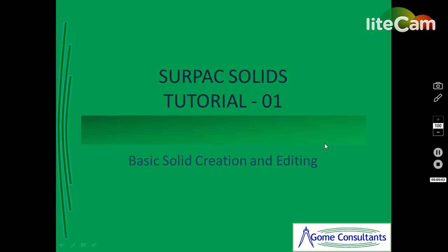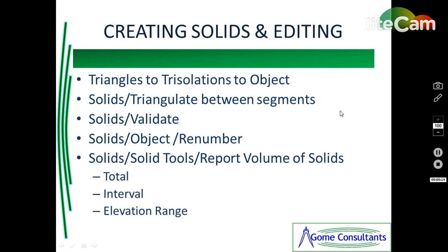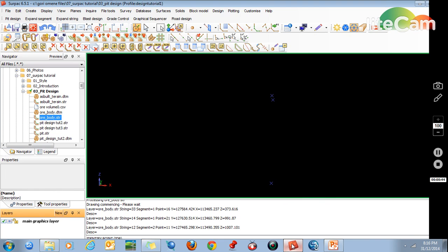Hello, this is Setback Solids Tutorial number one. In this tutorial I'll show you how to create solids and how to edit them. Basically triangles form a trisolation, and a group of trisolations form an object. It's basic understanding. To create a solid I'll show you how to triangulate between segments, then I'll validate the solid, renumber the solid, and then I'll show you how to do the volumes by total, by interval, and by range.